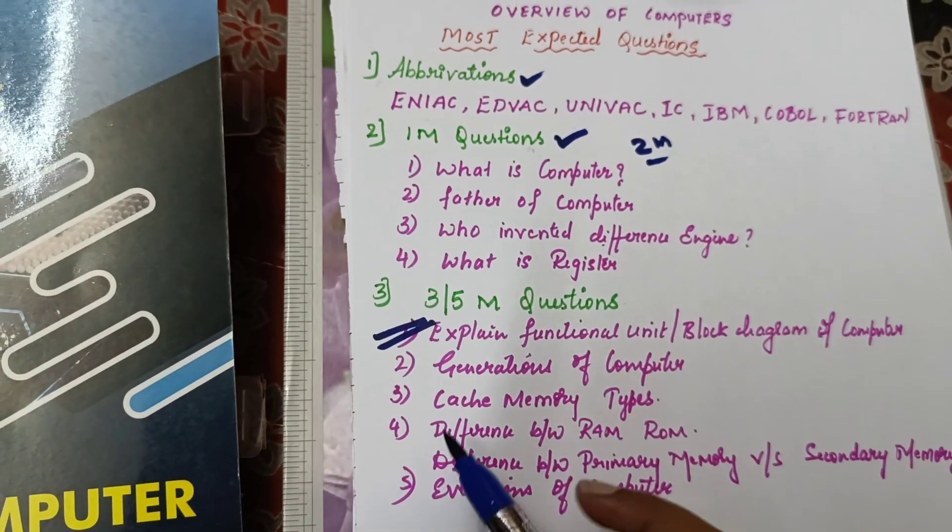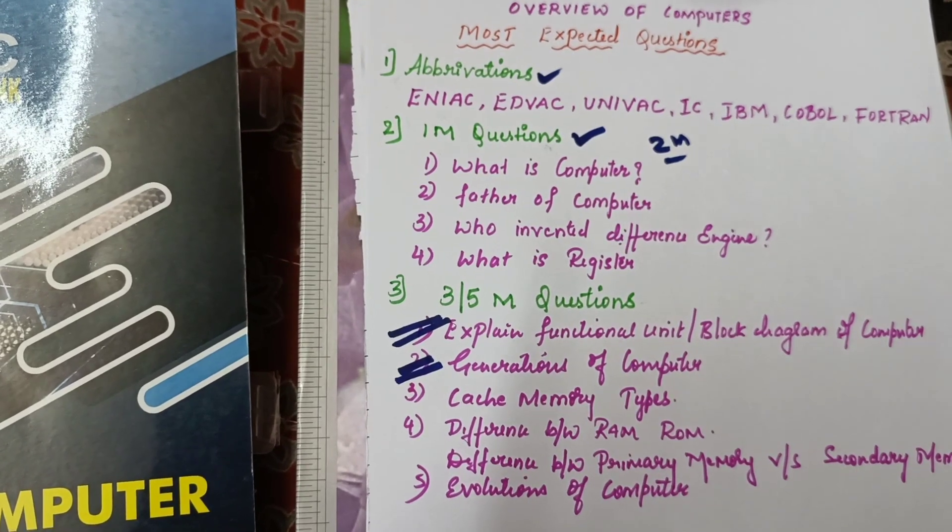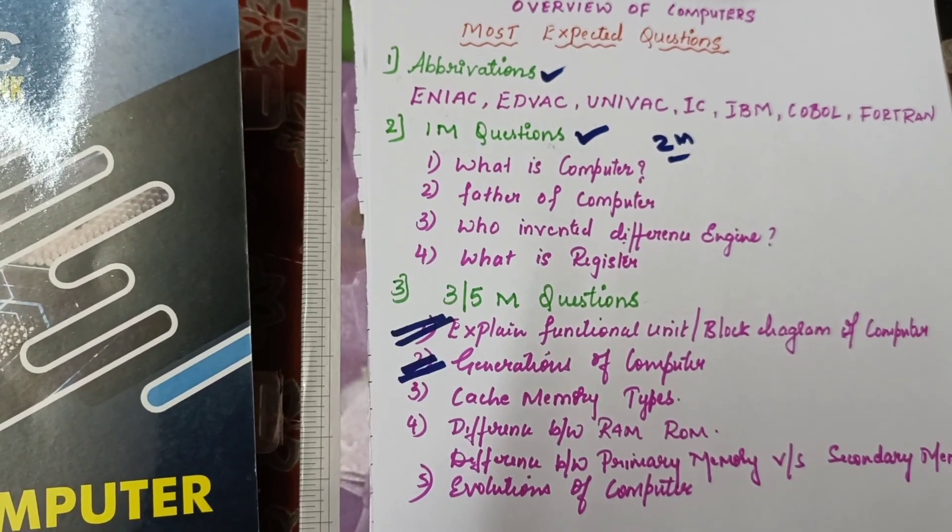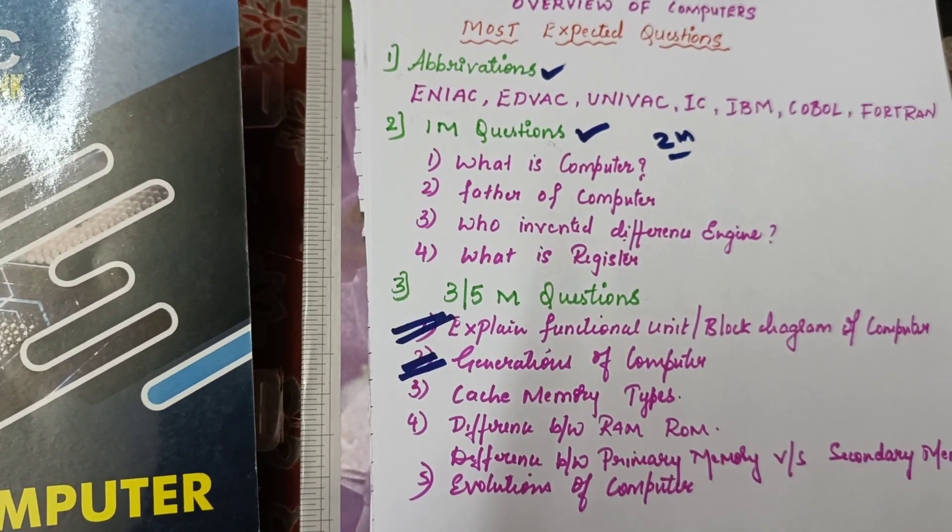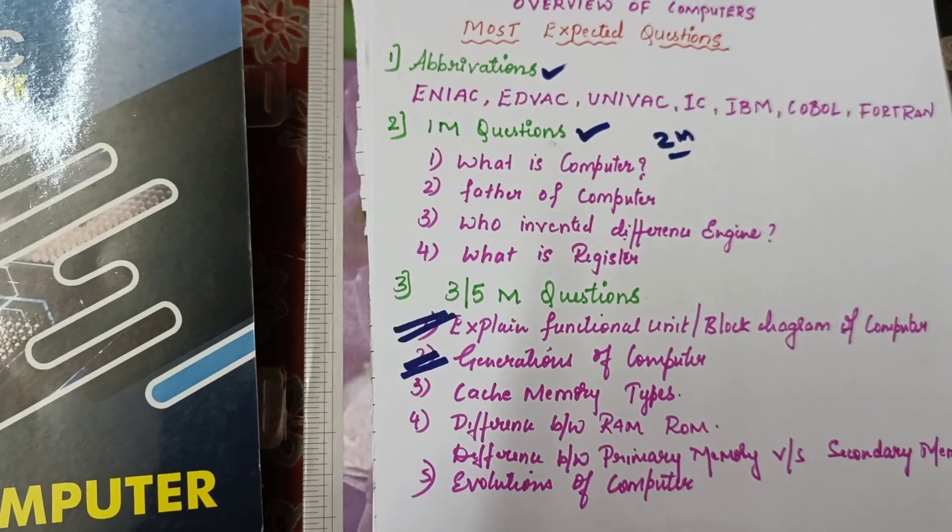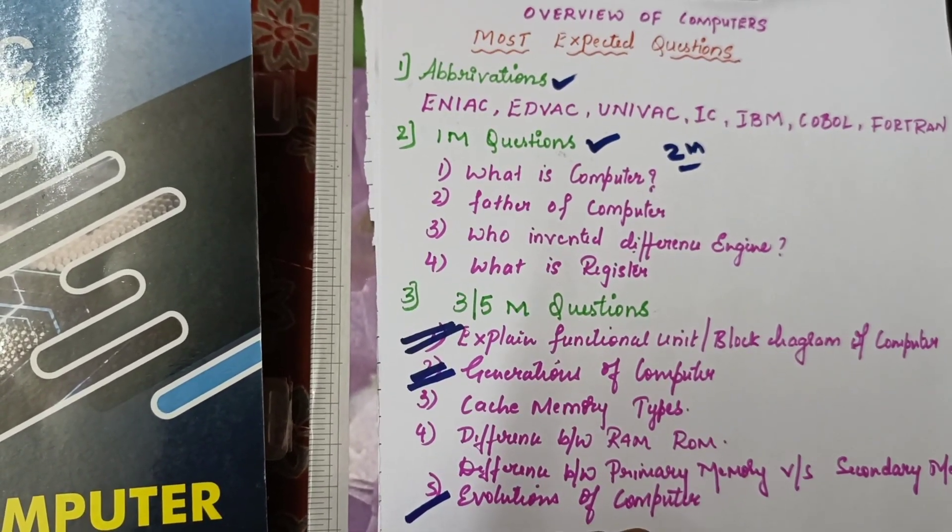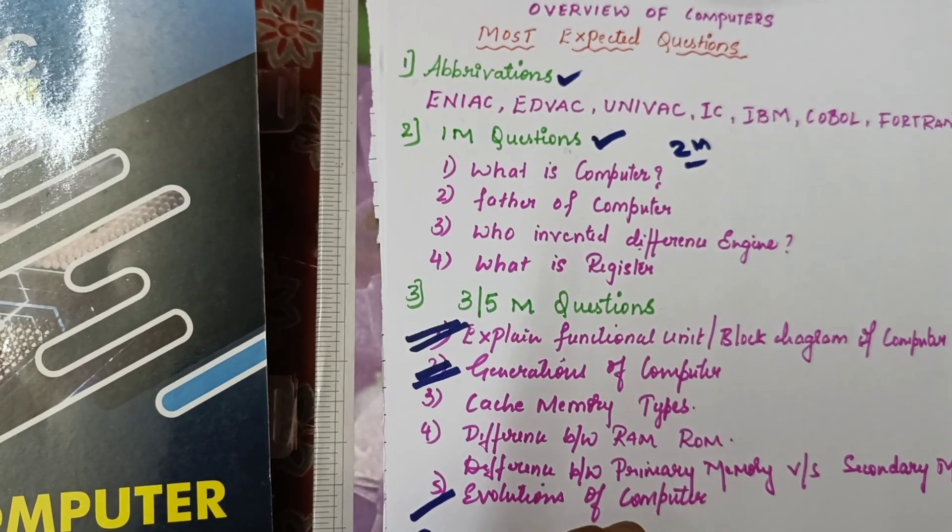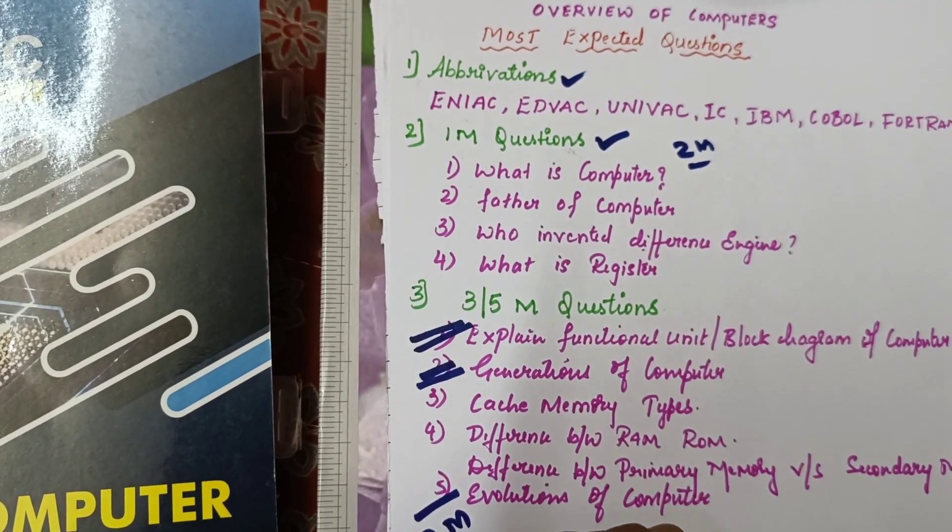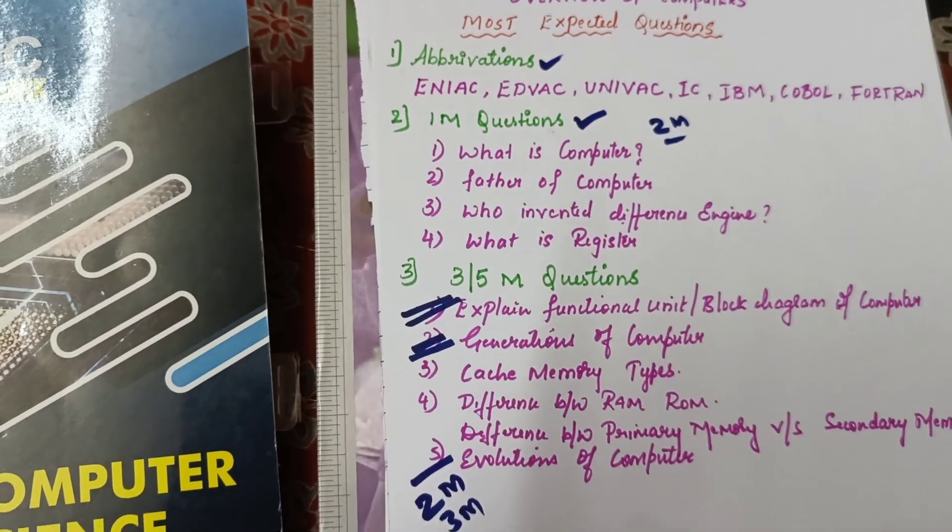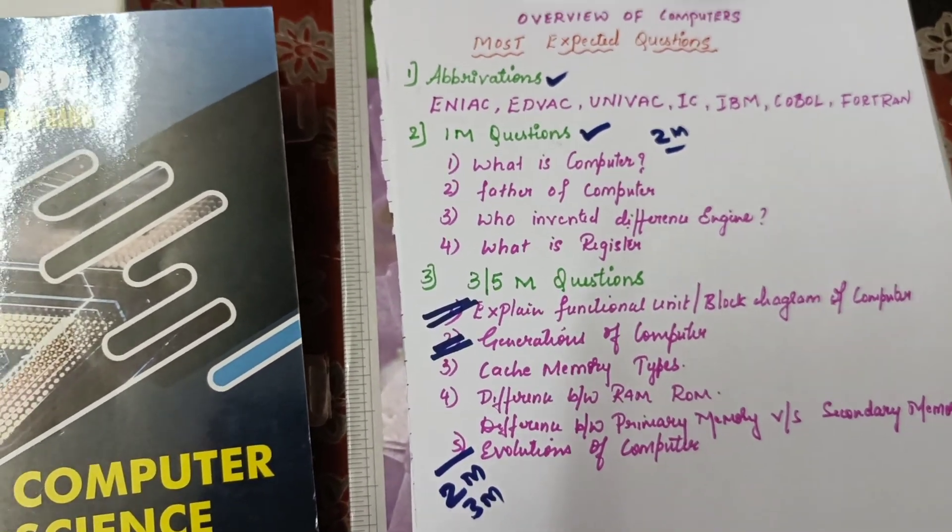What I'm making with a double tick is the most, most, most expected question - that's a compulsory question. Evolution of computer may come for two marks, three marks, or all types of marks. That's why I'm preferably writing it here. Take a screenshot of this and make use of it during your preparation.